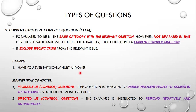Regarding the manner or way of asking in the control or comparison question, we have the Probable Lie Control Questions and the Directed Lie Control Questions. In the probable lie, the question is designed to induce innocent people to answer in the negative even though most are lying. In the directed lie control question, the examinee is instructed to respond negatively and untruthfully.